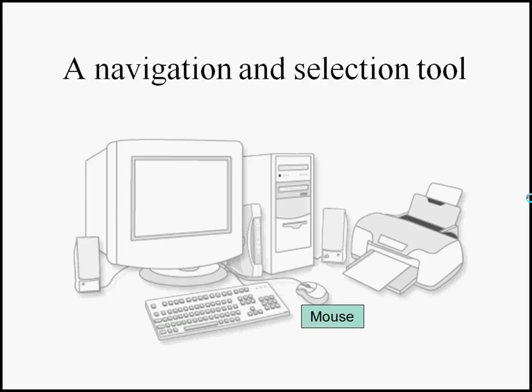Then there's the mouse. The mouse is what we call a navigation and selection tool. It allows you to move a cursor onto different things on the screen and by pressing a button, select them or make something happen. It's called a mouse because it has a little round body with a long tail connecting it to the computer.